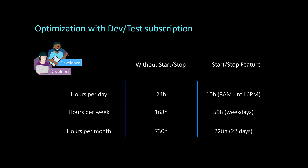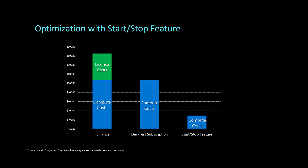We can optimize even more. Let's assume that your team works from 8am to 6pm on weekdays, which means you don't need to run your instance 24x7. Our calculation is simple: 10 hours per day and usually we have 22 workdays per month. So 10 multiplied by 22 equals 220 hours per month. At the end of the month, you will pay around $160 for your instance.